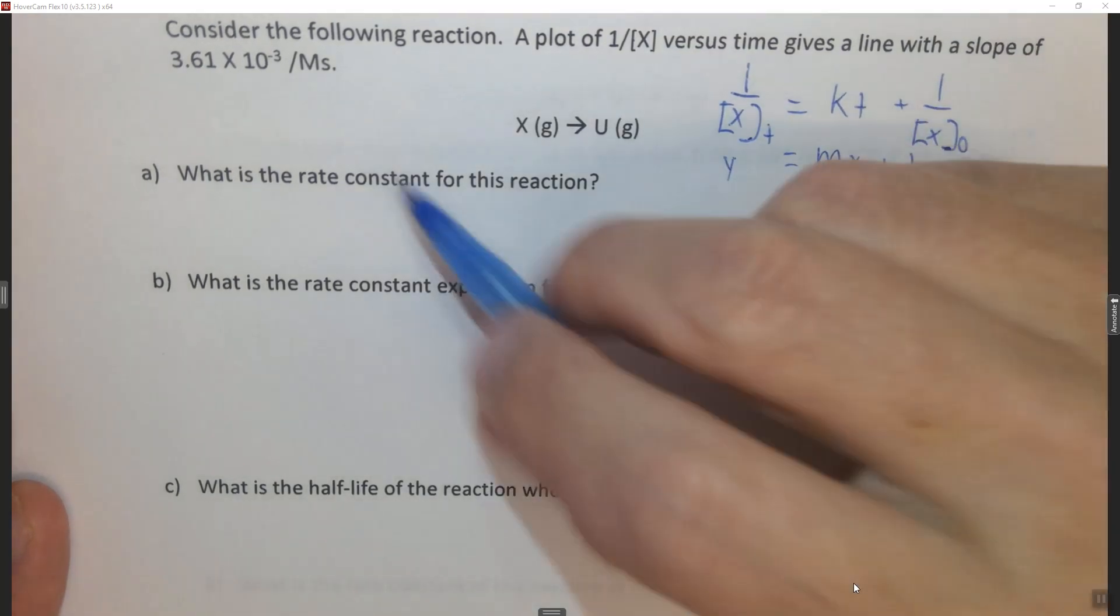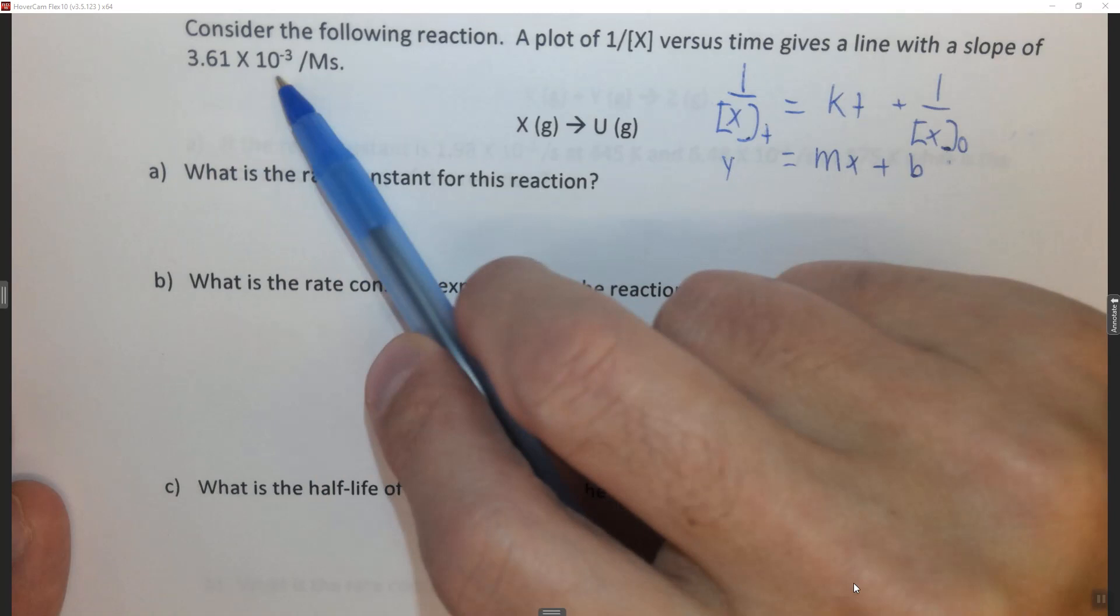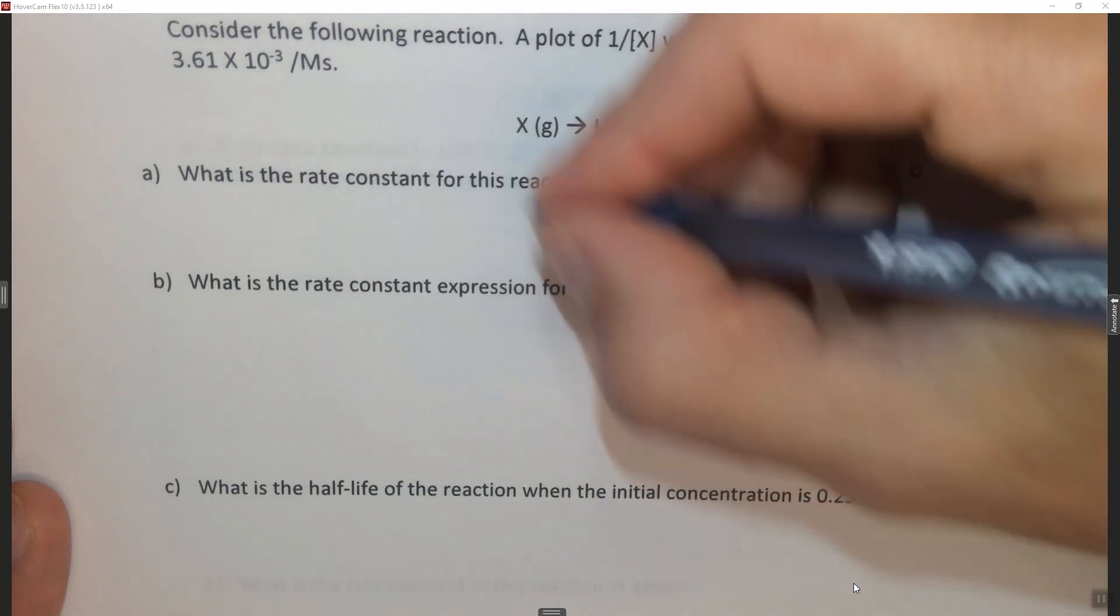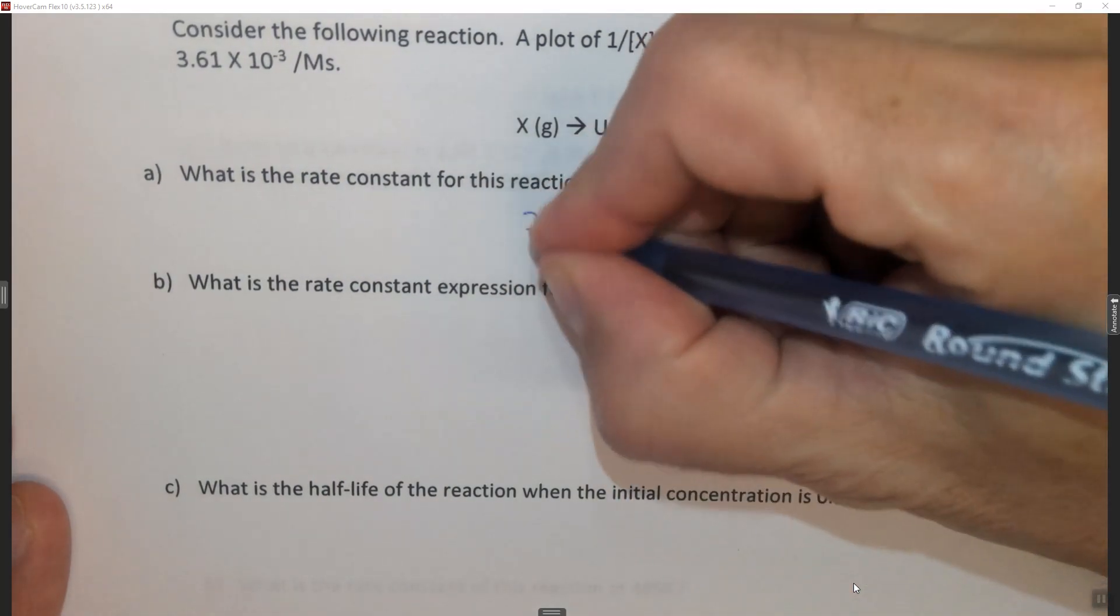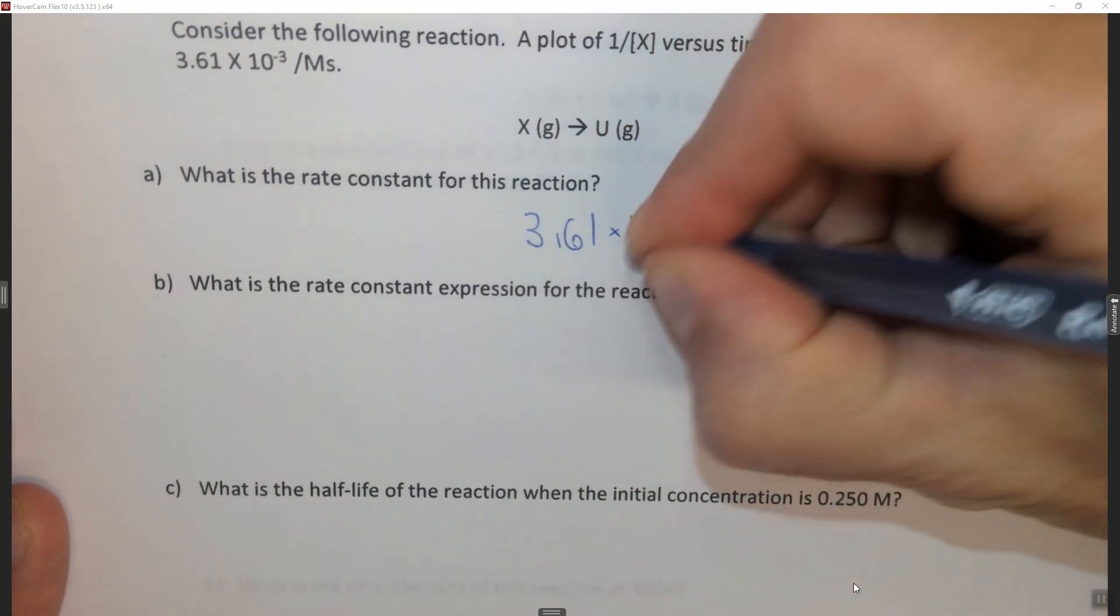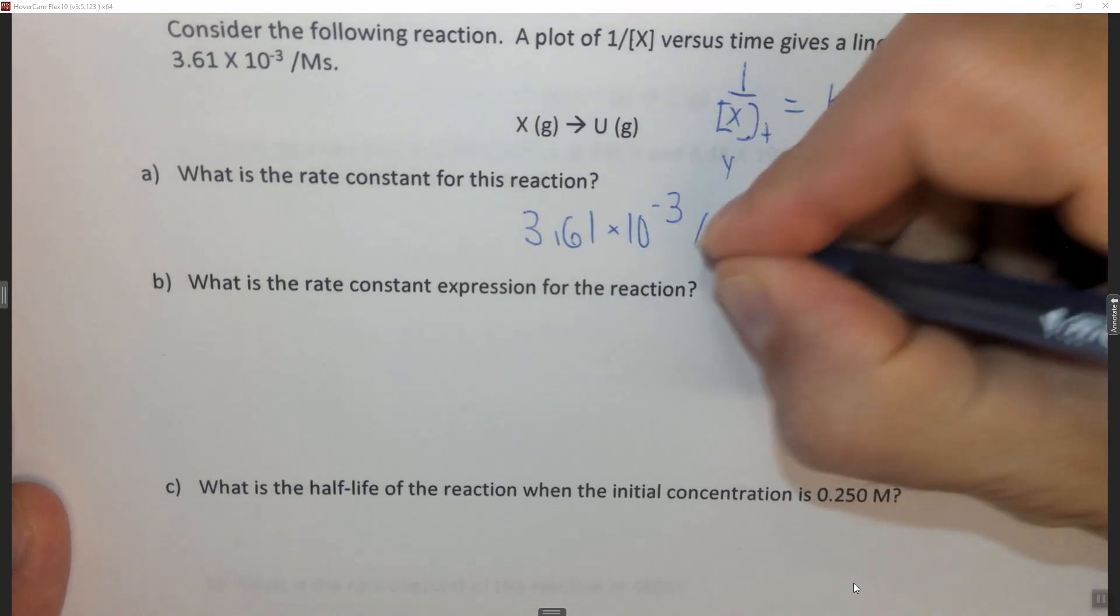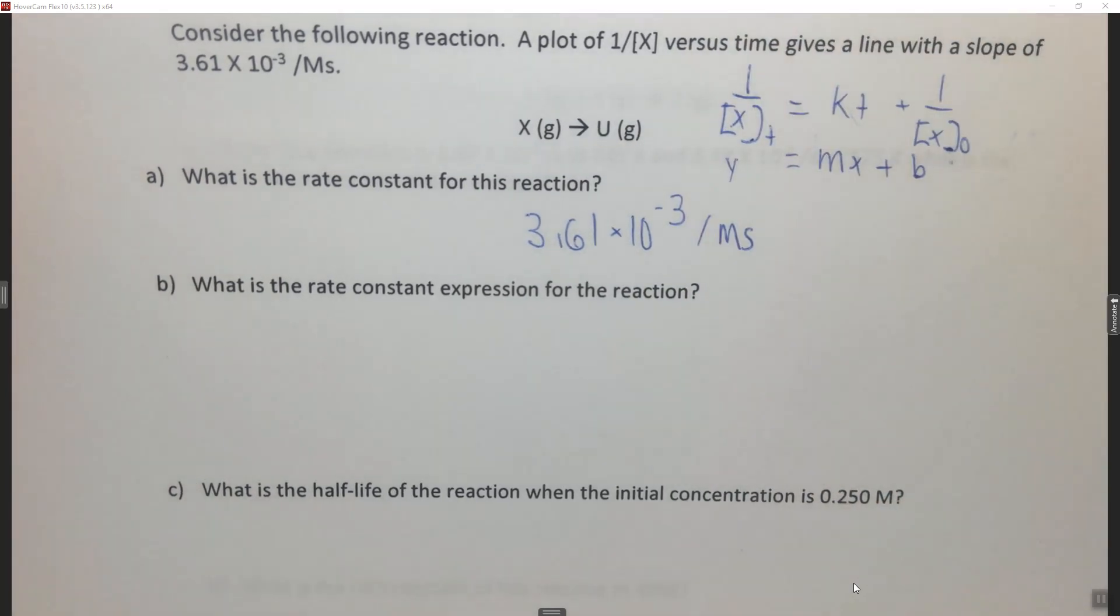So for this one, what is the rate constant of the reaction? It is 3.61 × 10⁻³ per molar second, but we also learn that it's a second-order reaction.